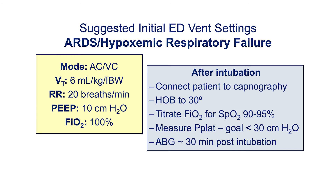We want to connect the patient to waveform capnography if that has not already been connected. We want to titrate the FiO2 to a goal saturation of 90 to 95% because we want to avoid hyperoxia. We want to draw an ABG about 30 minutes after starting mechanical ventilation in order to further guide ventilator management.